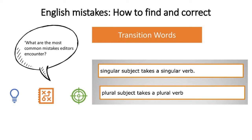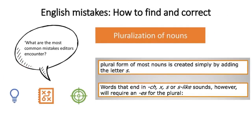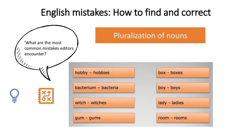Transition word errors often include subject-verb agreement issues — a singular subject has to take a singular verb, whereas a plural subject has to take a plural verb. Those are common problems in English. The plural form of most nouns is created by simply adding the letter S, but words that end in CH, X, S, or S-like sounds require ES for the plural. Pluralization of nouns can provide international colleagues with issues when writing in English — 'box' becomes 'boxes,' 'boy' becomes 'boys.' Notice that the X at the end requires ES to pluralize.